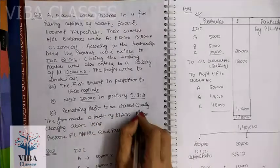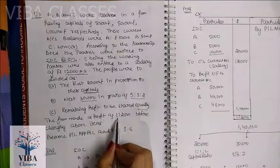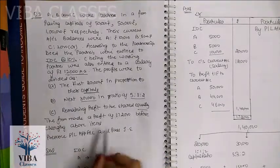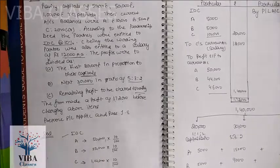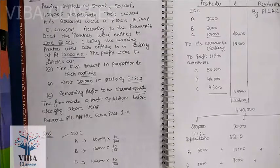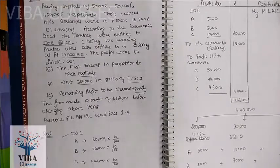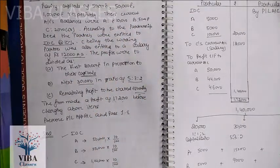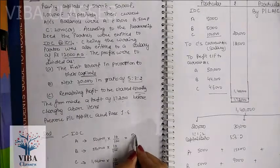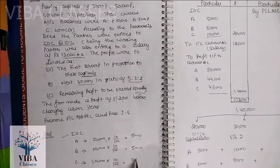You have to make a P&L Appropriation account and pass the necessary journal entries. First, calculate IOC in the working note. In the case of fixed capital, interest on capital is always calculated on opening capital. Since there are no changes in capital — no withdrawal or additional capital mentioned — the closing capital equals opening capital. So: A and B each get Rs. 50,000 at 10% = Rs. 5,000 each, and C gets Rs. 1,00,000 at 10% = Rs. 10,000. Total IOC = Rs. 20,000.